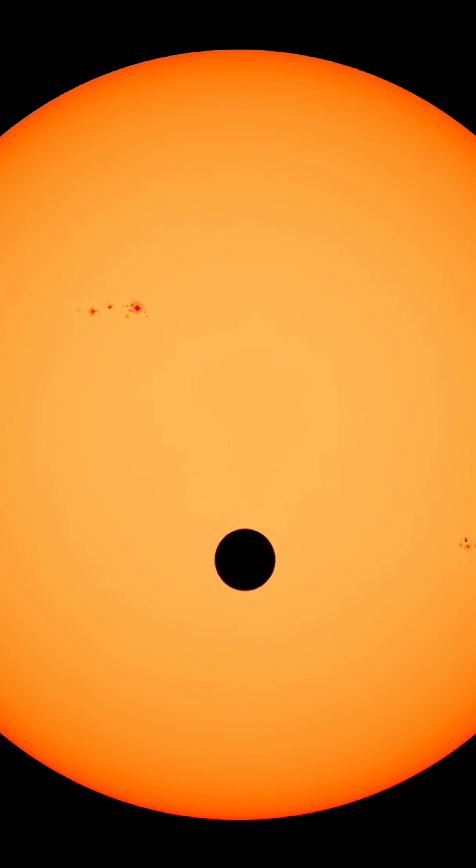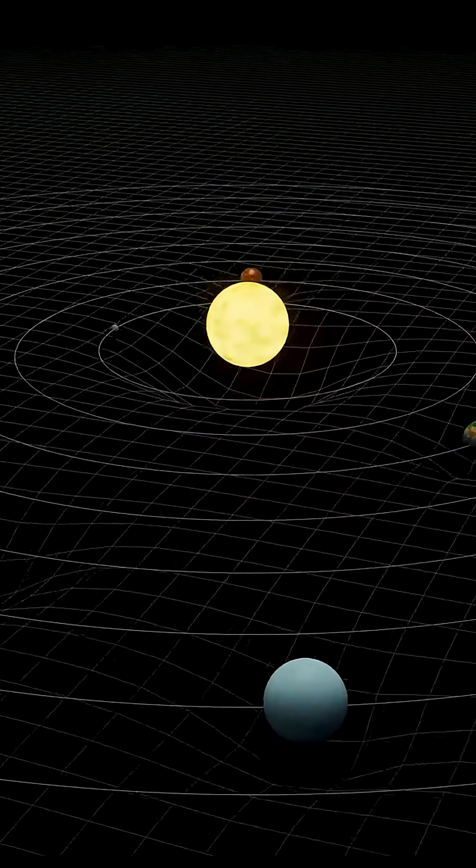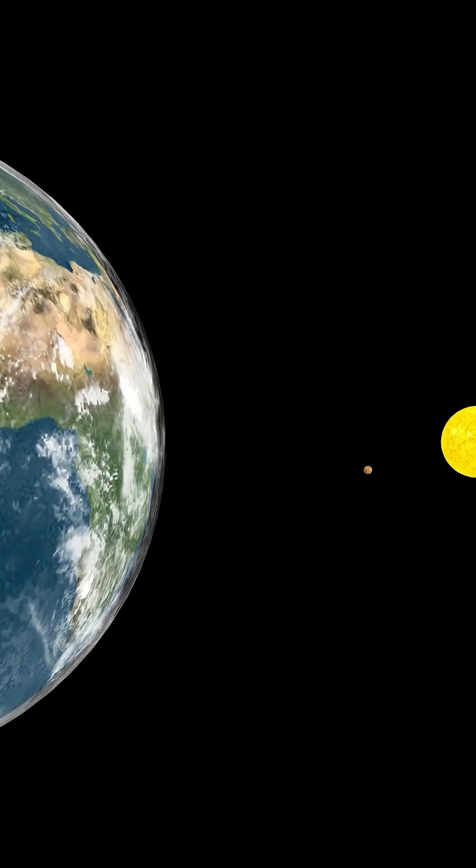The Sun holds 99.8% of the solar system's mass, not Jupiter. Not all the planets combined, just the Sun. Earth? Practically a rounding error.